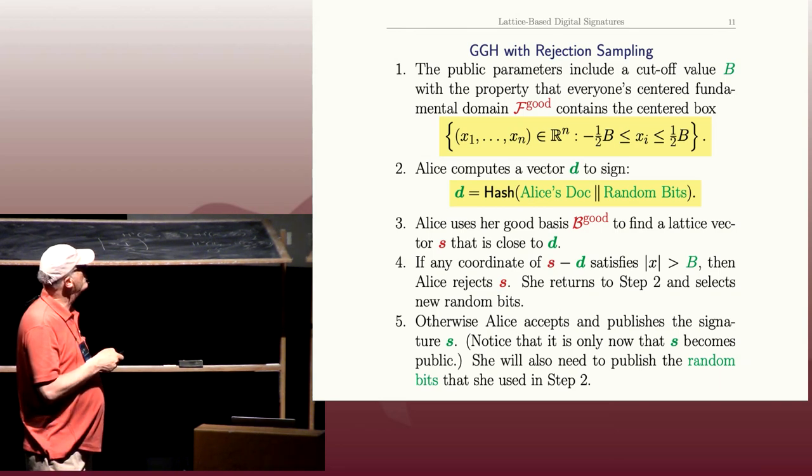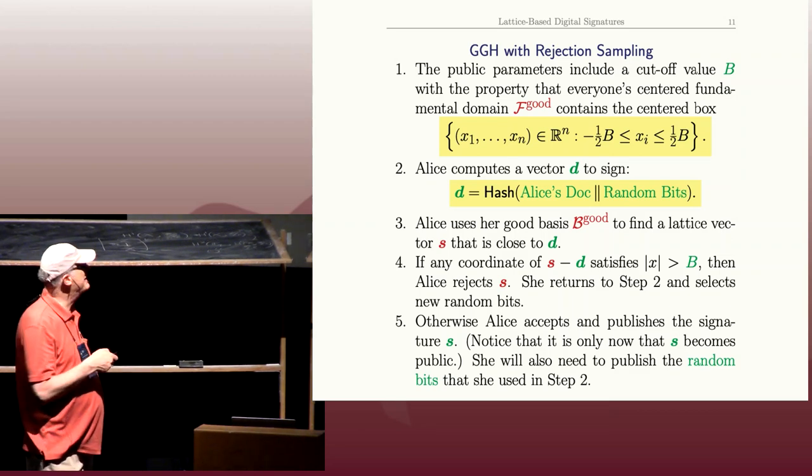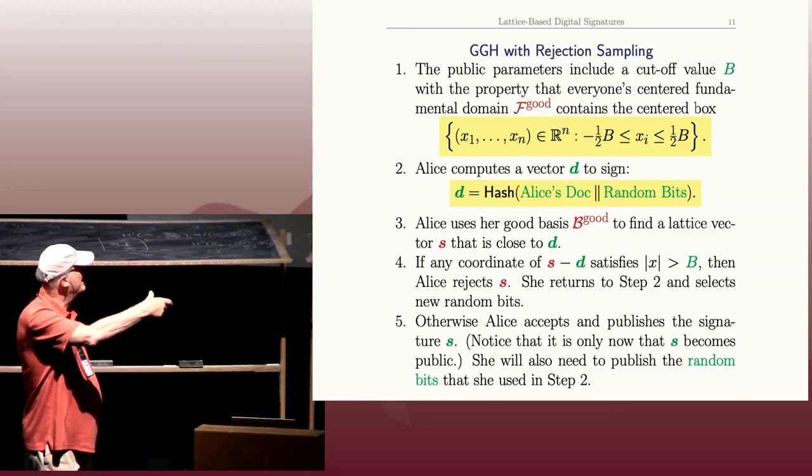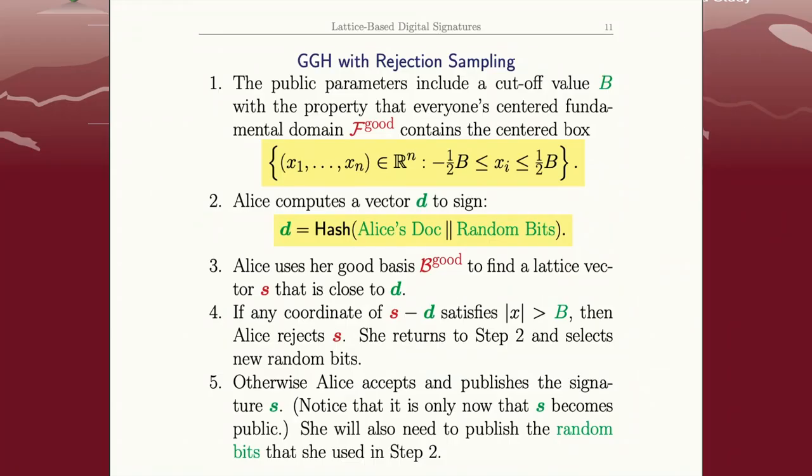So what you do is you want to choose B so that everyone's fundamental domain contains this box whose side lengths are B. Then when Alice computes a signature, she hashes her document and some random bits, she uses her good basis to find the S that's the signature, but she only uses that S if all of the S minus D coordinates are less than or equal to one half B, so they're in the box.